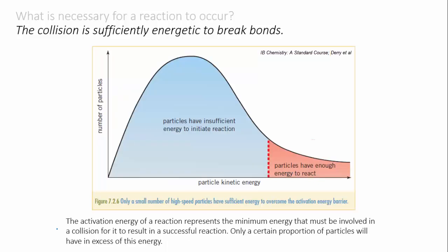So we can redraw the Maxwell-Boltzmann distribution to show that for some generic reaction, a certain proportion of molecules will have enough energy to react, while the rest will not.